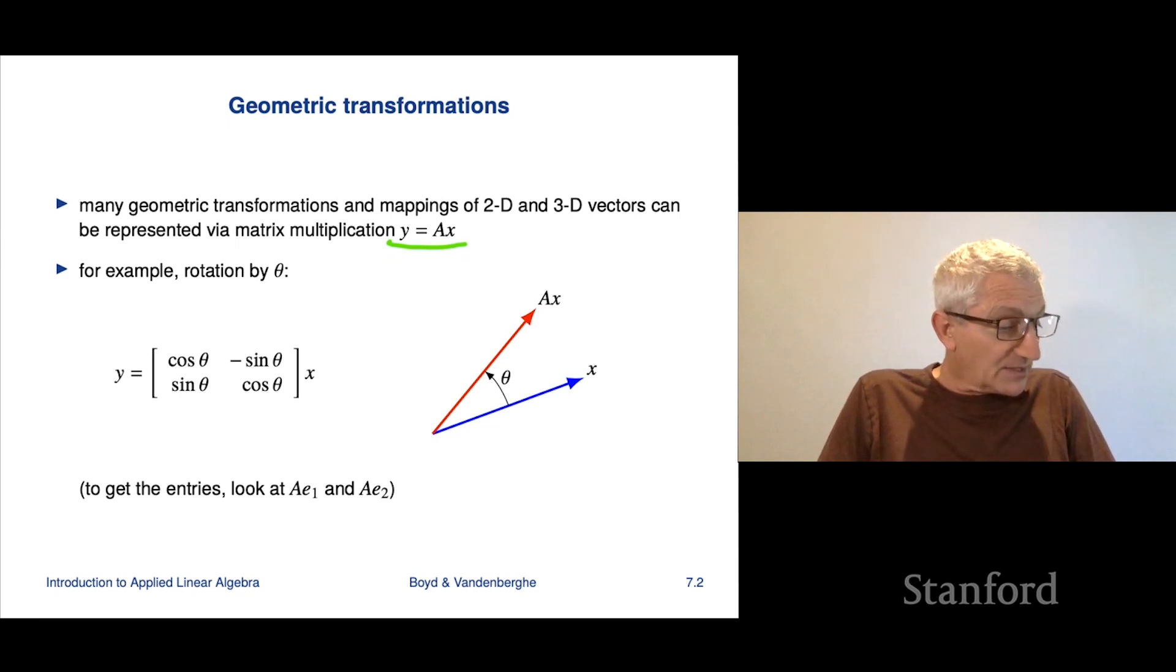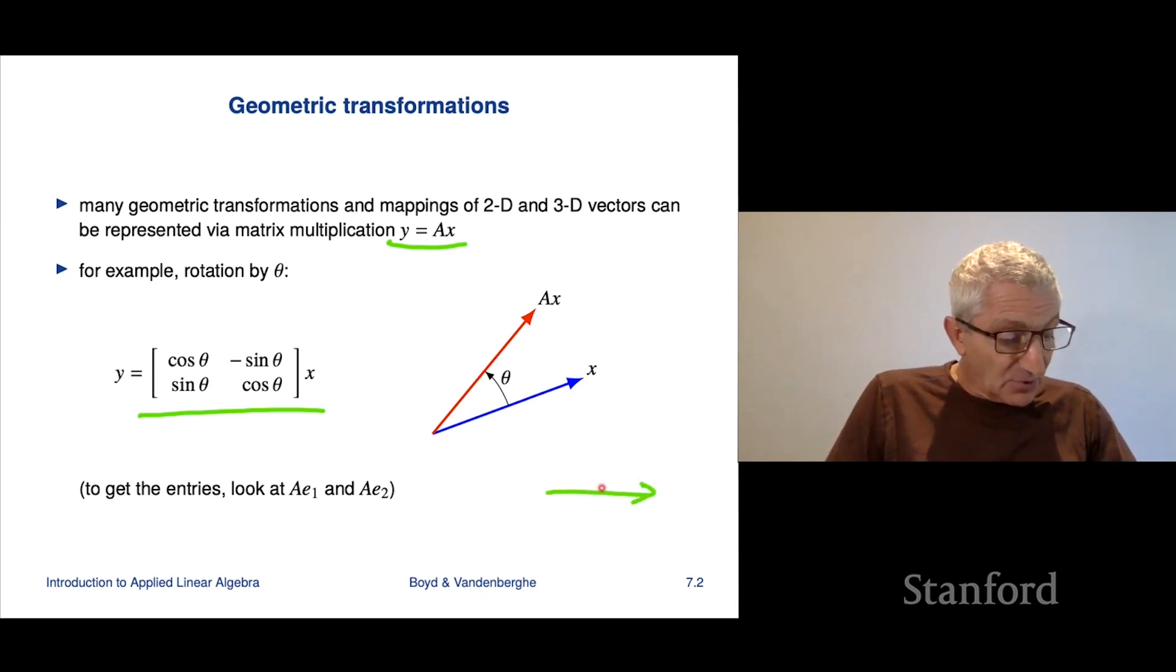And it turns out it has the form y equals Ax. Now, to get the entries of A, there are lots of ways to do it. But a very simple one is to do things like this. When you have y equals Ax, if x is equal to E1, the first unit vector, then y is going to be the first column of A. So for example, if I took E1, that's this vector here, and I rotate it by theta radians, I get to this vector. And sure enough, this distance is the cosine of theta. That's our first entry here. And this height here is sine theta, and that's here.